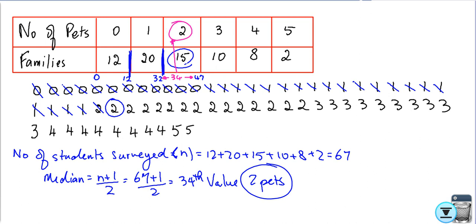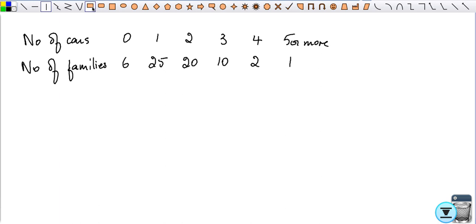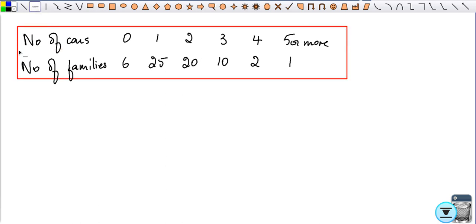I'm going to do another example so that you can follow. Let's draw another table. This time our survey is going to be about the number of cars and the number of families owning those cars. There are some families without a car, some have one car, some have two, some have three, some have four, some have five or more. Six families had no car, 25 families have one car, 20 families had two cars, 10 families had three cars, two families had four cars, and there was one which had five cars or more.